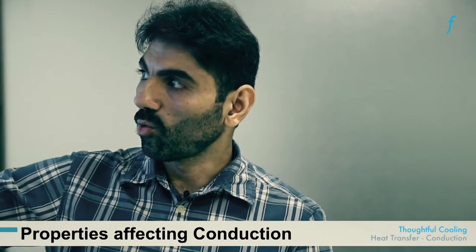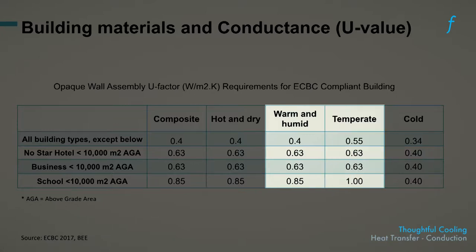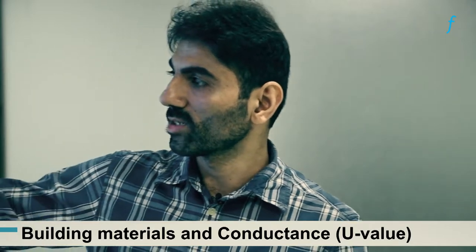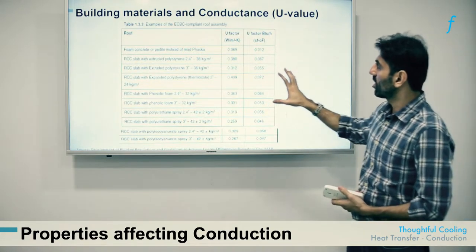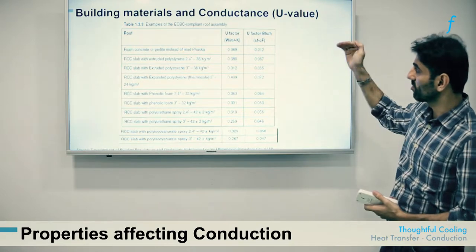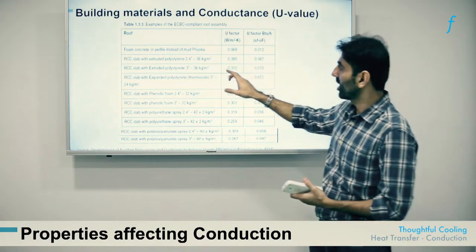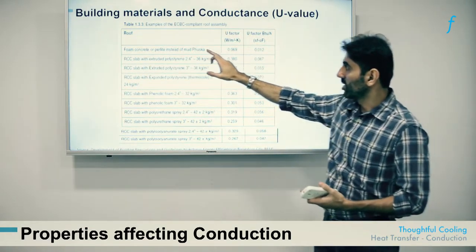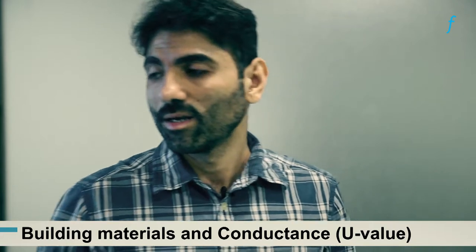This implies that almost no ECBC-compliant building can avoid insulation — simple building materials such as brick and concrete without insulation will not give a U value low enough to meet ECBC compliance. For a warm and humid climatic condition, the U values required are lower than for a temperate zone, because the threat of heat ingress is much higher. U values required for an ECBC-compliant roof assembly are also much lower than those of simple materials like brick and concrete, making insulation almost imperative in modern buildings.